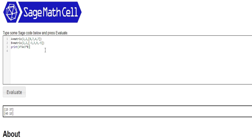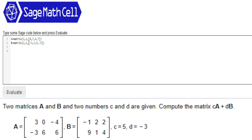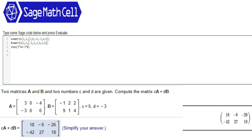Let's do another example. This one's a little bit more complicated to read, but it's essentially the same principle. We have A with two rows and three columns, and B is the same. We just simply enter the numbers in order: 3, 0, negative 4, negative 3, 6, 6. Then B: negative 1, 2, 2, 9, 1, 4. It wants us to do CA plus DB, where C equals 5 and D equals negative 3. So we do 5 times A plus negative 3 times B. Evaluate that, and we get the correct answer.